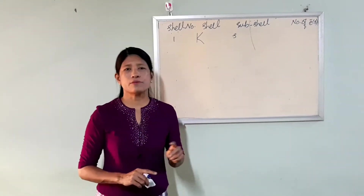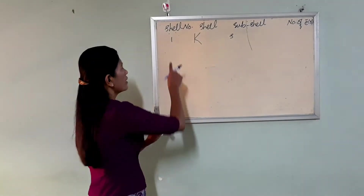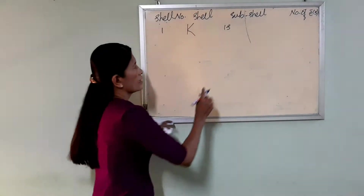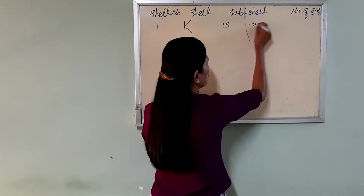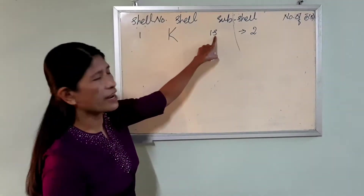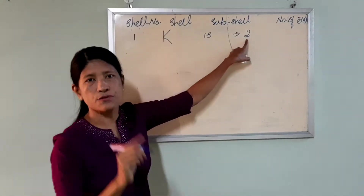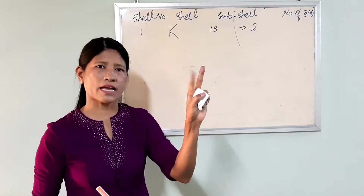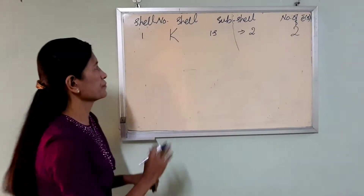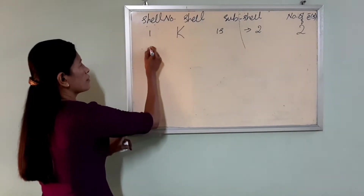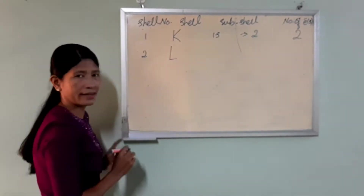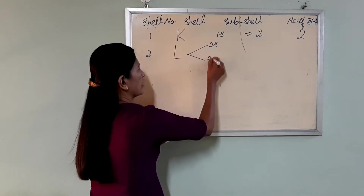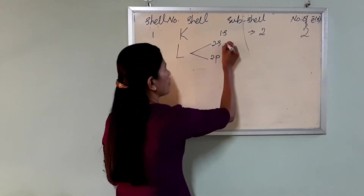The orbitals are labeled with small letters: s, p, d. The first one is 1S. The 1S is called 1S. The next is called 2S.